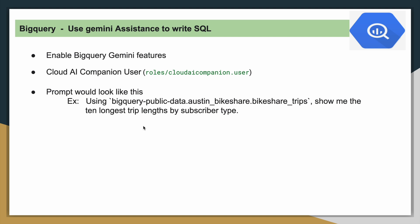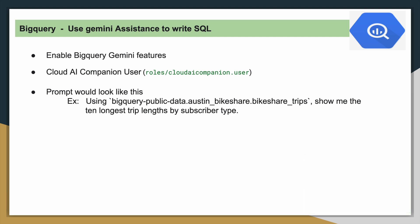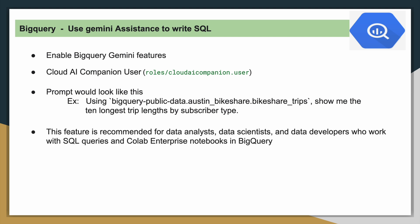Here is a simple example of how a user prompt would look. Using a public dataset table, a prompt might be: 'Show me the 10 longest trip lengths by subscriber type.' Based on this input, Gemini will parse it and generate a SQL query for the user to execute in BigQuery. This feature is recommended for data analysts, data scientists, and data developers who work with SQL queries and also Collab Enterprise notebooks in BigQuery. It is not currently recommended for business users.